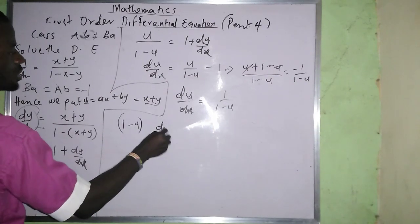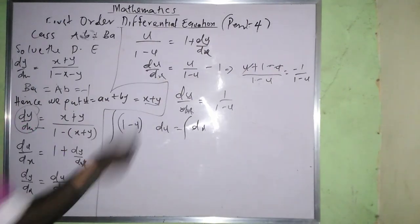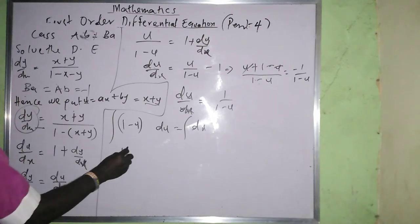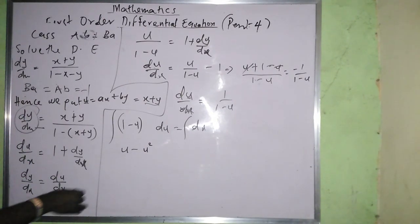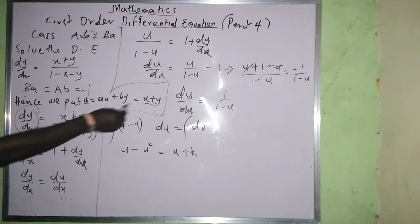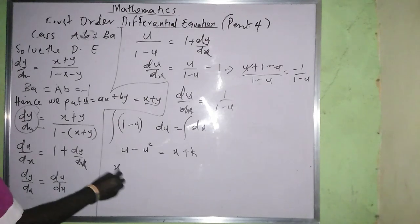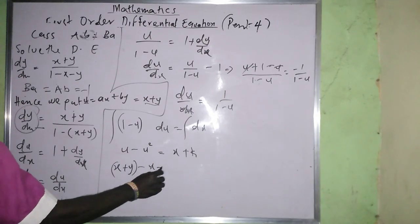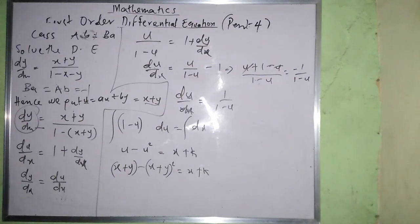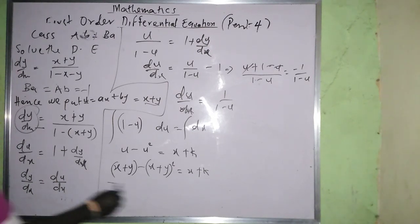Integrating both sides: ∫(1 − u) du = ∫dx, giving u − u²/2 = x + k. Substituting back u = x + y: (x + y) − (x + y)²/2 = x + k. You can expand further if needed. That is the final answer for case two.